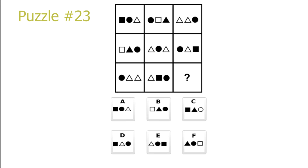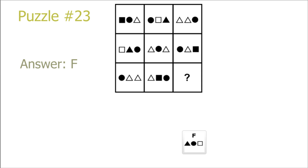Puzzle 23. This is a diagonal from the top right to the bottom left puzzle. By looking at the main diagonal, we see that the picture itself is also rotated, like the shapes inside it are rotated. So we base ourselves on picture 4 and rotate it one position to the left, which results in picture F.